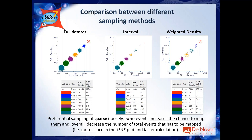If you sample 5,000 events using random sampling, a possible result is that you sample just one red event — which may not be enough to map that population properly in tSNE. Using weighted density — one of the two density-based downsampling methods available — the results improve considerably: the red population yields 14 sampled events instead of one, the blue yields 17 instead of two, and the light-blue gate 3 yields 34 instead of 13.